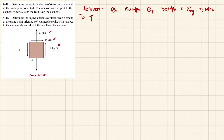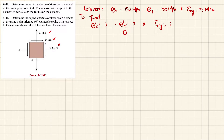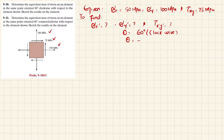What we have to find is the equivalent state of stress: sigma x dash, sigma y dash, and tau x dash y dash, when theta is equal to 60 degrees clockwise. If we write clockwise, then theta is equal to minus 60 degrees.